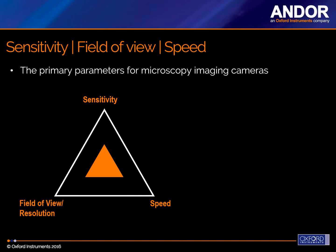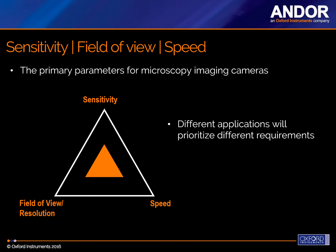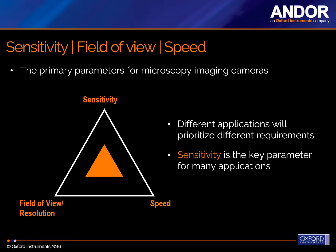We'll briefly recap the three primary parameters for microscopy imaging cameras: sensitivity — being able to detect the signals we are working with; field of view — having enough coverage for the image data we're working with; and speed — for dynamic cell processes we need something sufficiently fast to resolve temporal information. Other times we may have very long exposure applications where there are small changes in intensity over a very long period of time. These different applications all prioritize different requirements, but sensitivity is the key one for most applications.